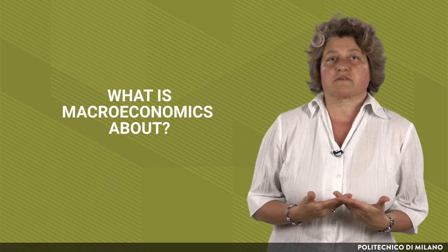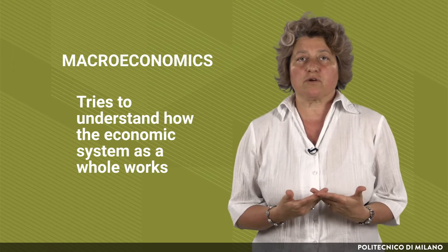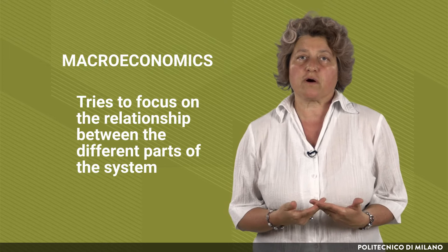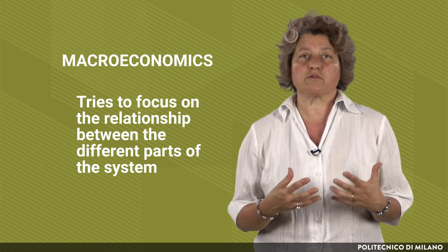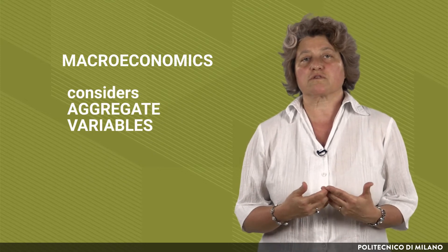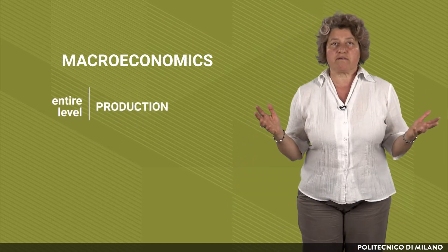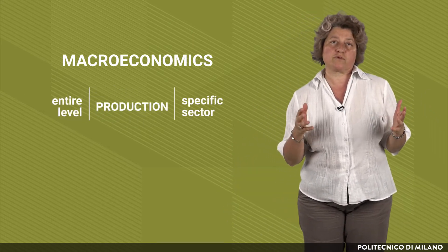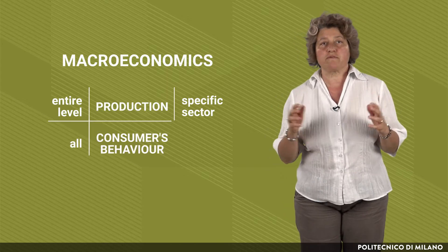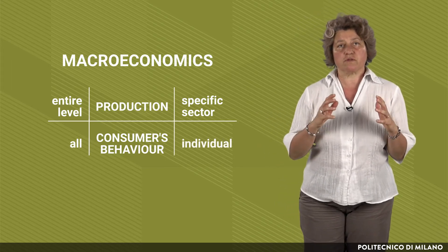What is macroeconomics about? Macroeconomics tries to understand how the economic system as a whole works, and tries to focus on the relationship between the different parts of the system. Macroeconomics considers aggregate variables — that is to say, the entire level of production, rather than looking at what is produced in a specific sector. It considers the behavior of all consumers together, rather than looking at the choices of individual consumers.